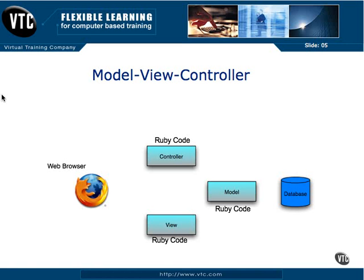The model takes care of the state — meaning what the current data is, if it needs to be updated, if it needs to be inserted, those types of things. Also in Rails, the model describes the relationships between the tables. If there's a one-to-many or many-to-many relationship going on, that's handled in the model code. In the video that describes the model specifically, we'll actually look at some Ruby on Rails code.